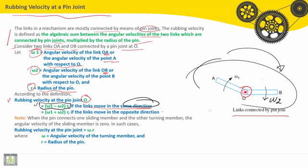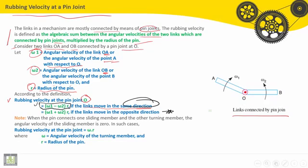Case 2: If the links move in the opposite direction, the formula for rubbing velocity is (ω₁ + ω₂) × R.